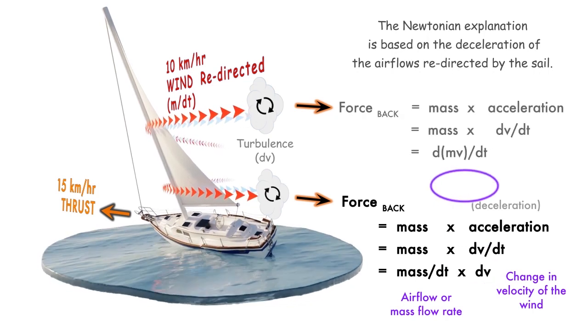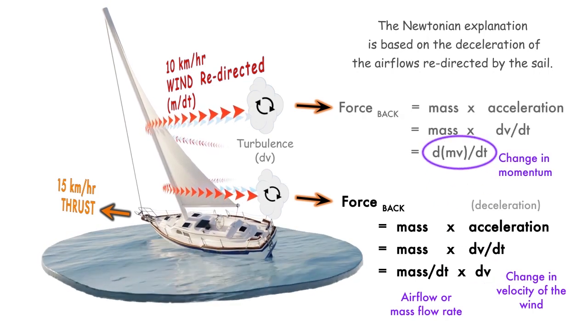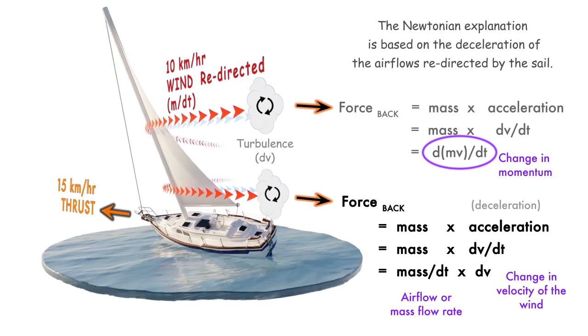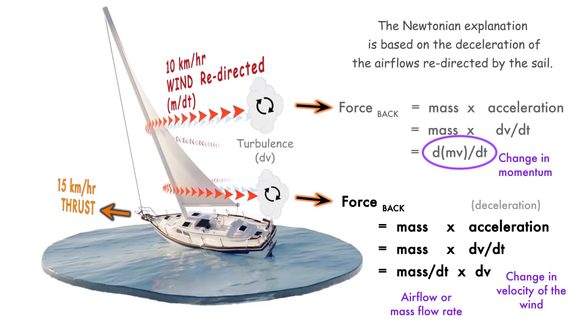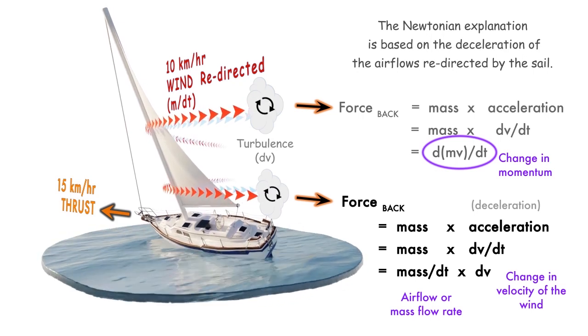Or, to put it another way, as the wind decelerates, it loses momentum. As a result, the backward force also equals the change in momentum of the wind, which is transferred to the boat.